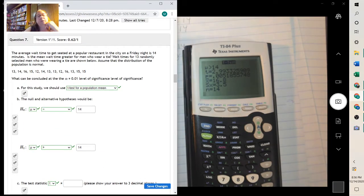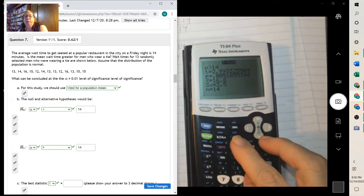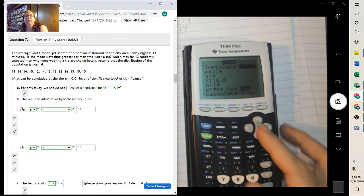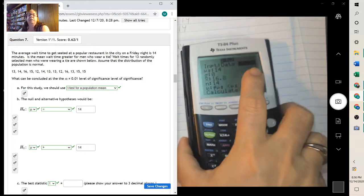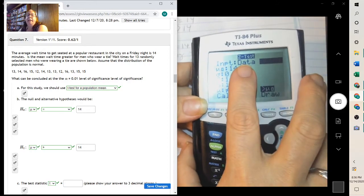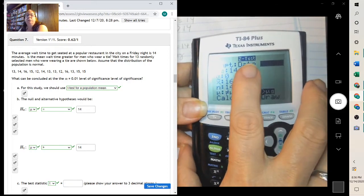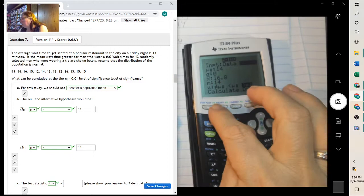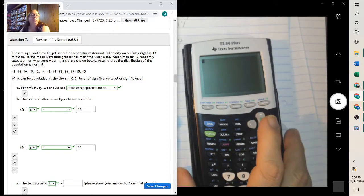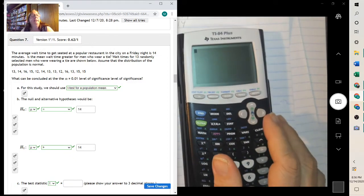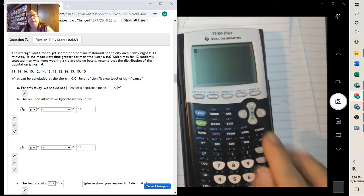Now when they give you data, notice when we went into the test, it has stats and data. Well, we'll use data. So first you have to put the data in. And so we need to type all of these in. To type them in, that is under stats and edit.